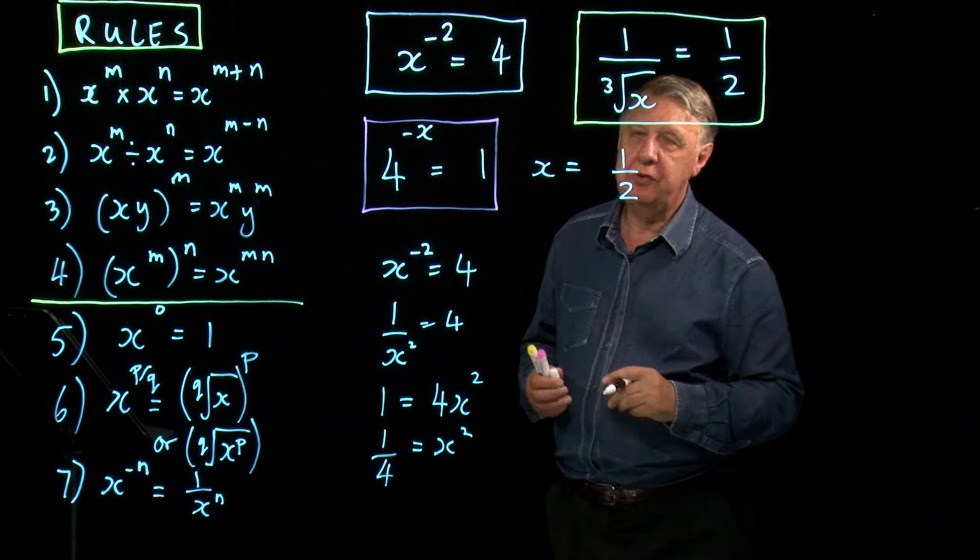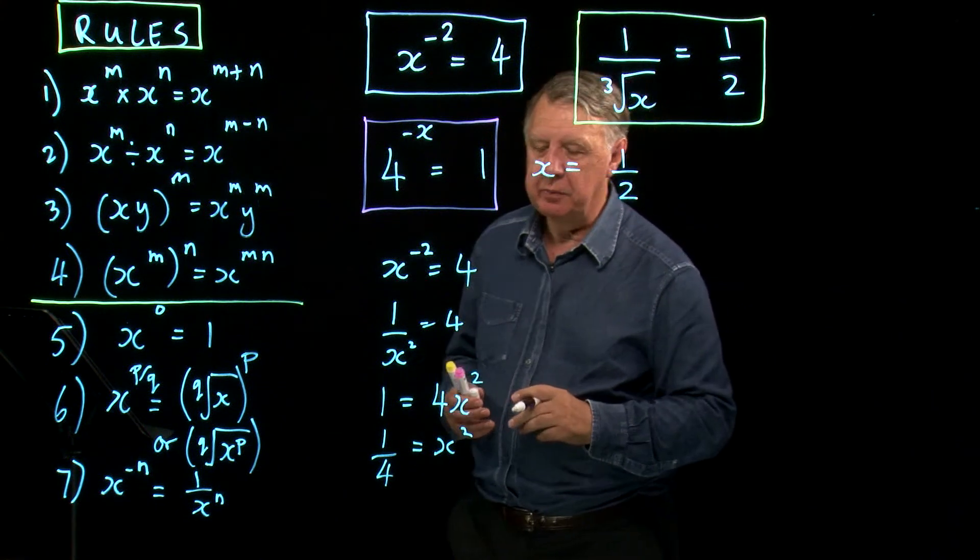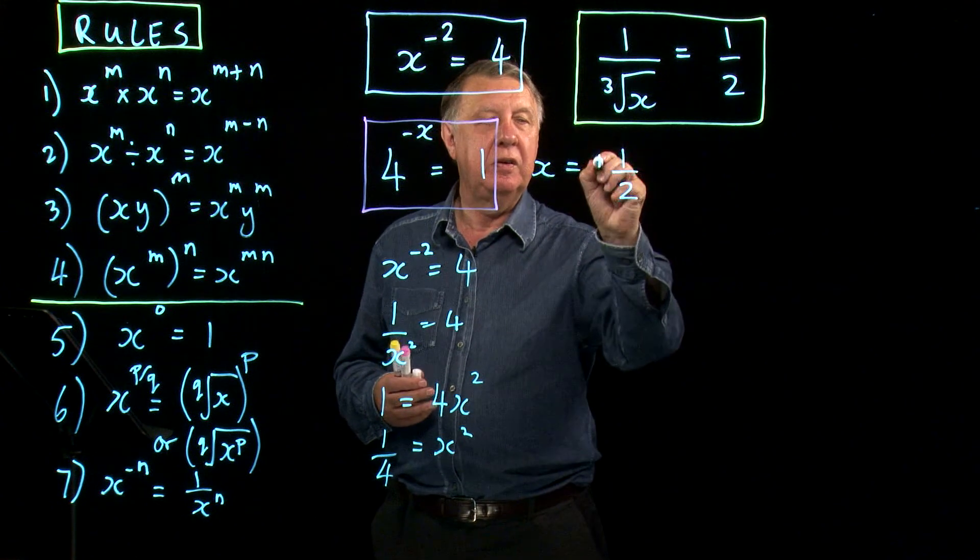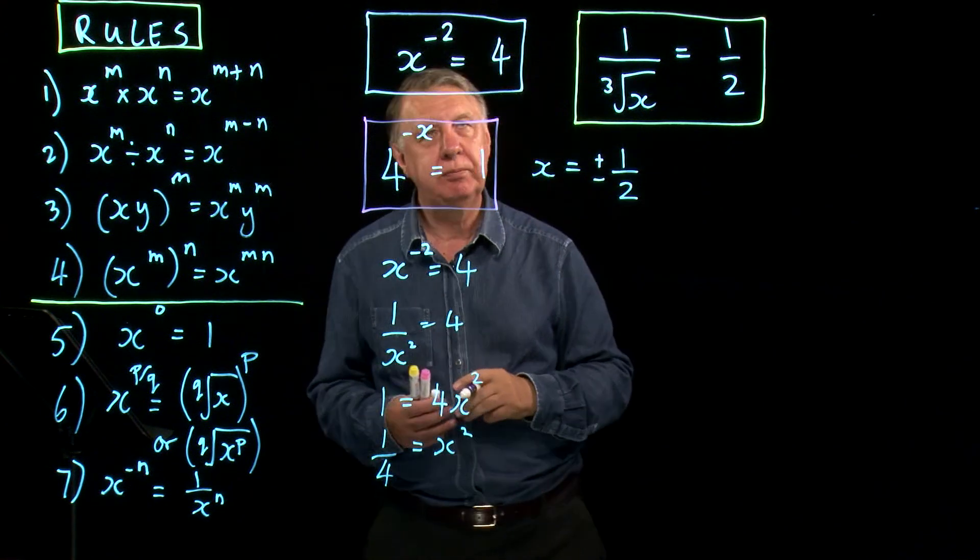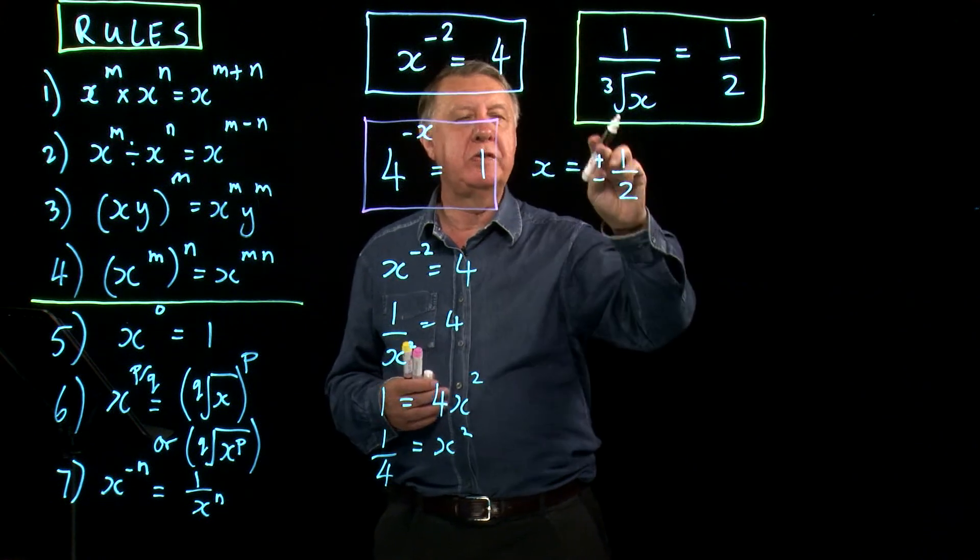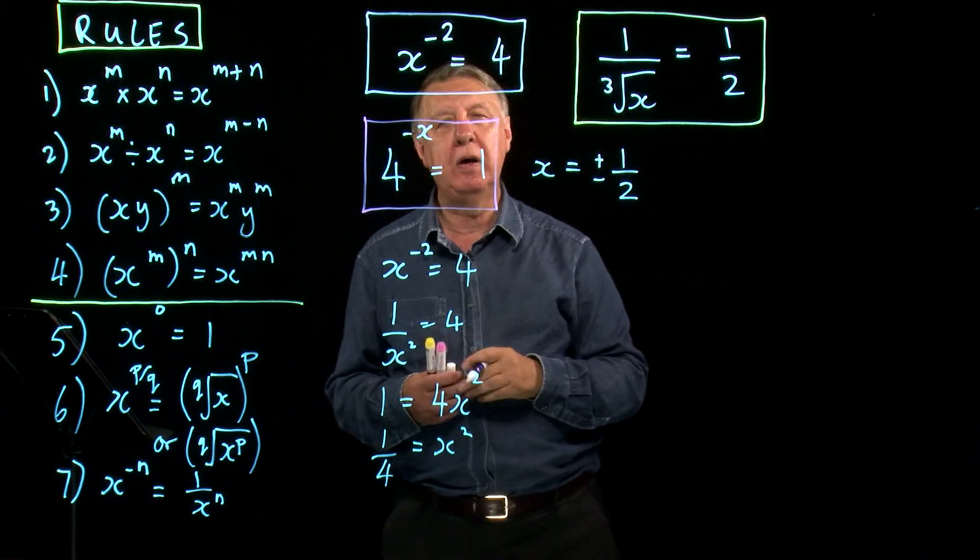And of course you know that that's not the answer because whenever we have x squared equals something we need plus or minus. So the white equation then has two solutions plus and minus a half.